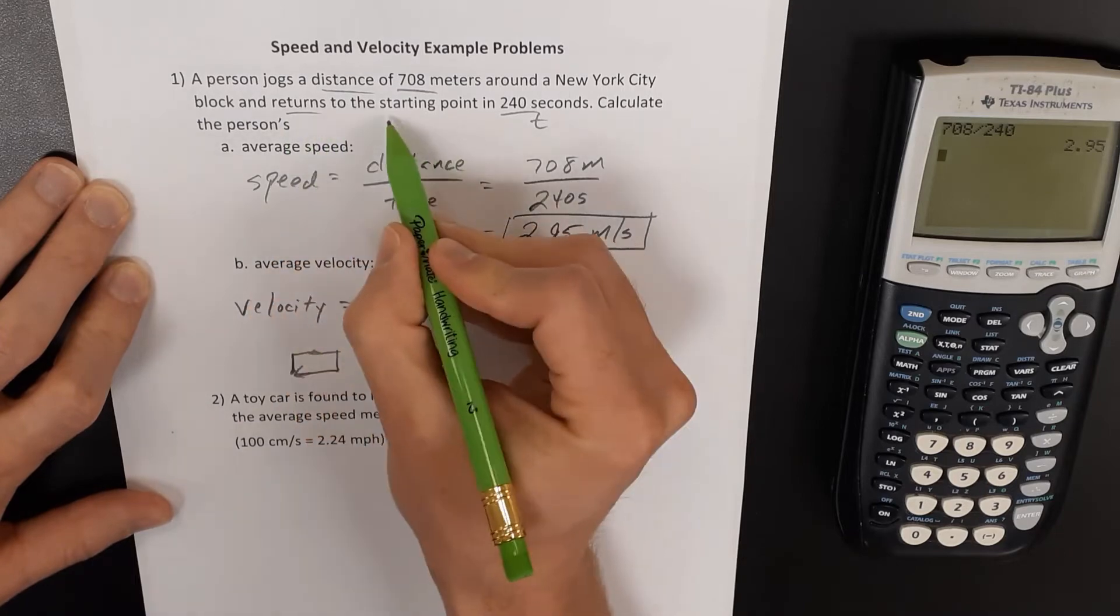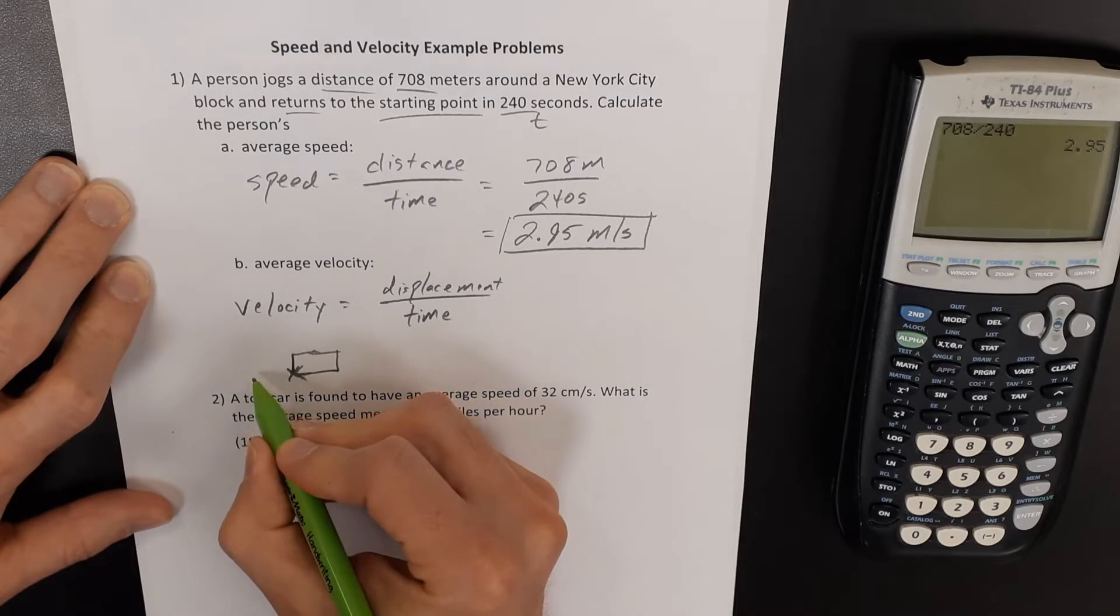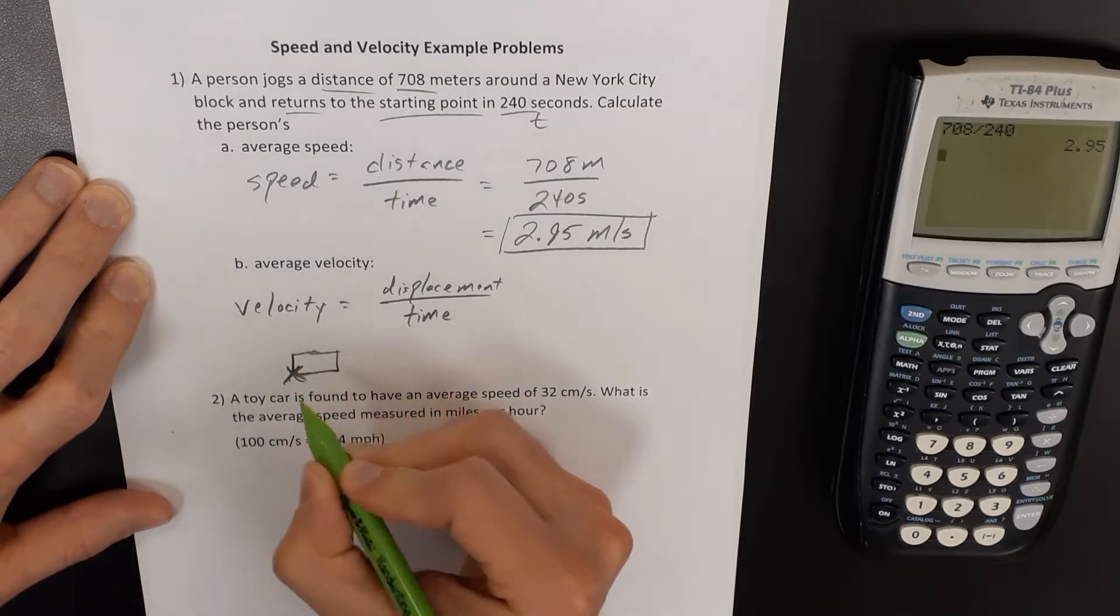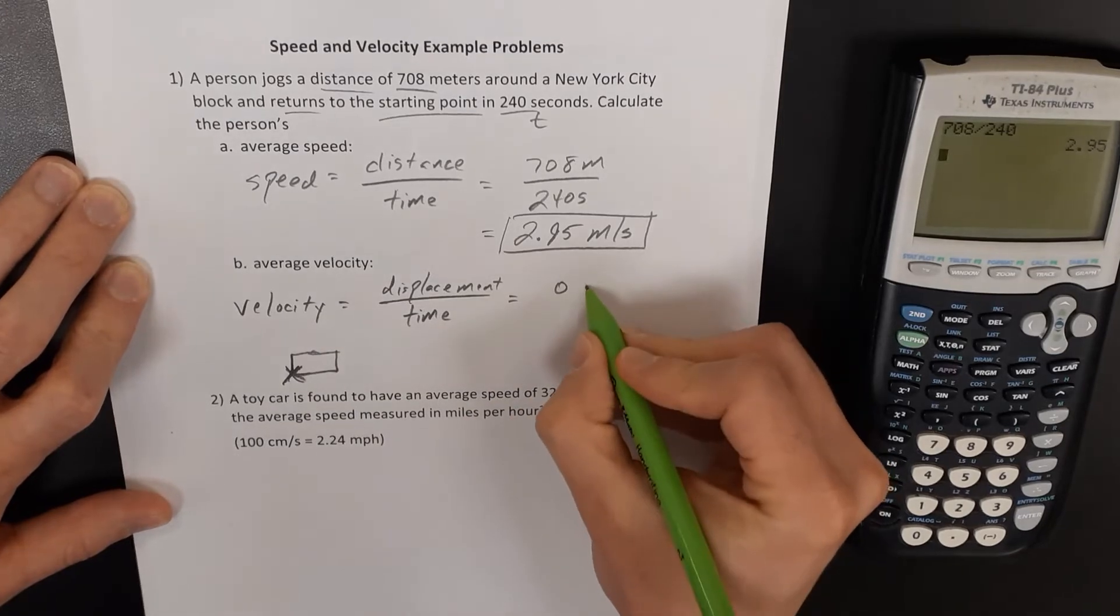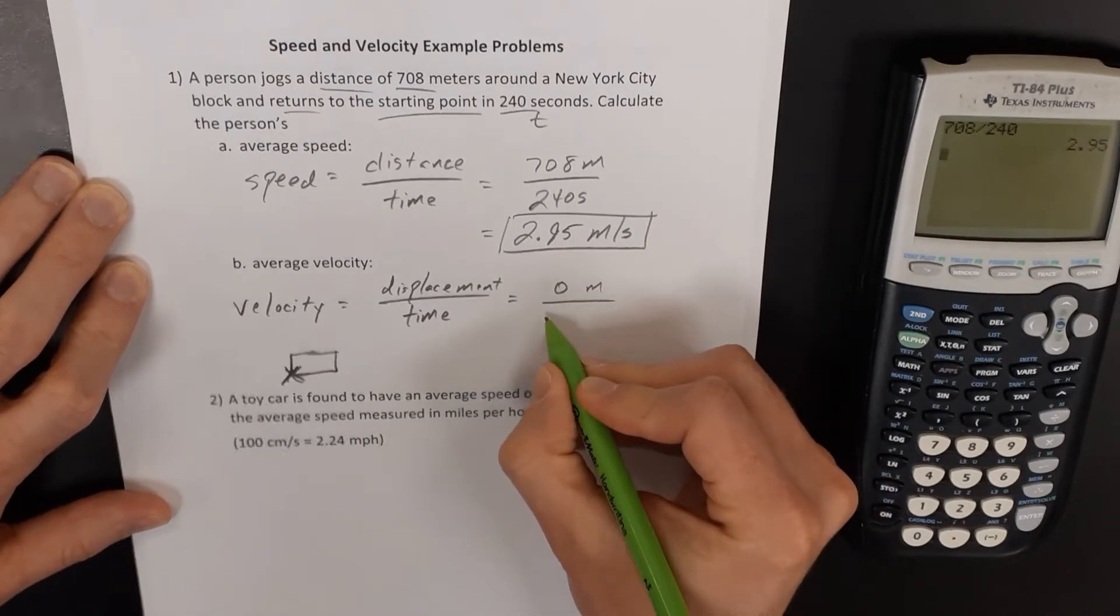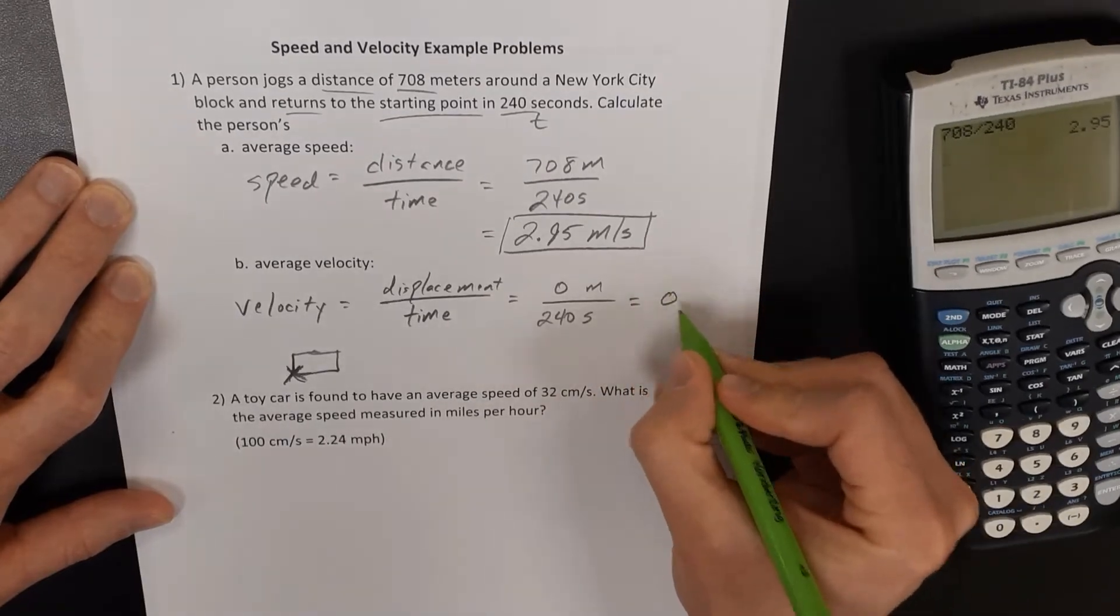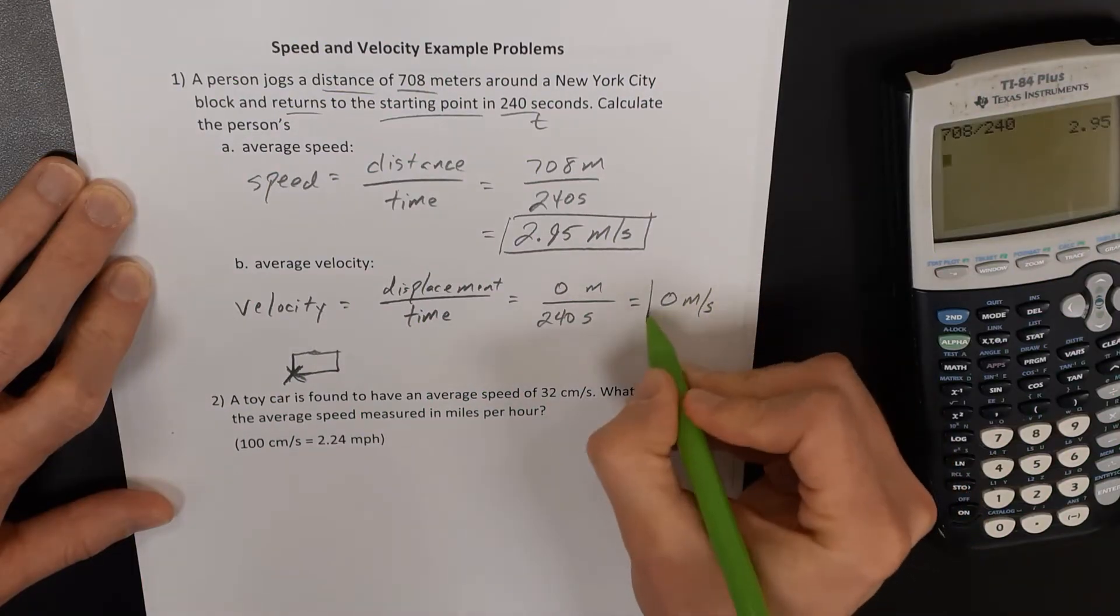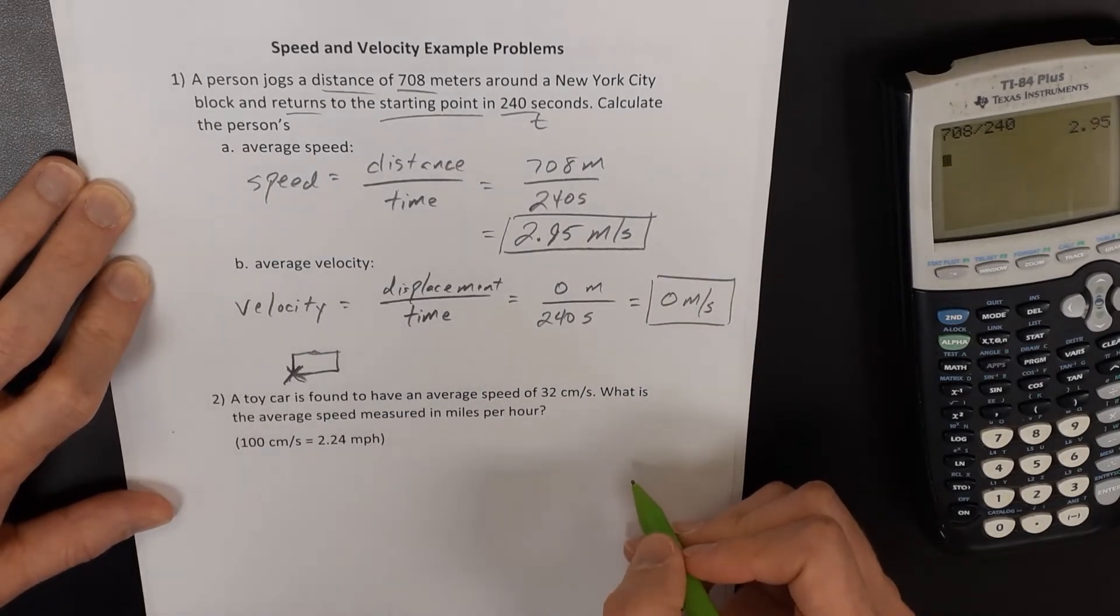They return to the starting point, meaning they started and ended at the exact same location. That means this person's displacement is 0 meters. They are 0 meters from where they began in the first place, and so they're going to have an average velocity of 0 meters per second.